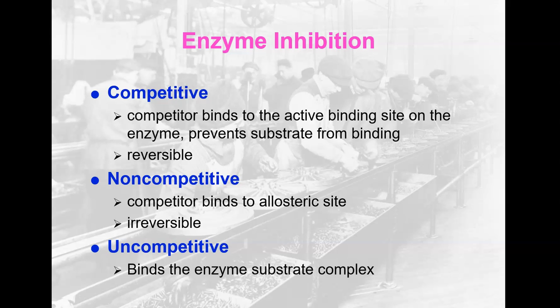Things that can inhibit enzymes include competitive inhibition, noncompetitive inhibition, and uncompetitive inhibition. These can basically turn off enzyme activity. The body doesn't always need to produce those products, and it can release enzymes as needed or use competitive, noncompetitive, or uncompetitive inhibition to prevent too much product being made. In competitive inhibition, a competitor molecule binds to the active site and prevents the substrate from binding. It is reversible — the competitor molecule can unbind. This is often a mechanism used by drugs to turn off certain enzymes.